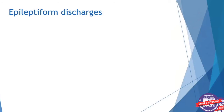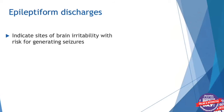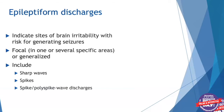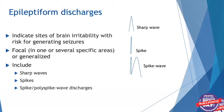Other common findings include epileptiform discharges — abnormalities that indicate sites of brain irritability with risk for generating seizures. They can be focal in one or several specific areas, or generalized, coming from all areas of the brain at once. These include sharp waves, spikes, and spike-polyspike wave discharges. A sharp wave looks a bit rounded; a spike is pointier; and then we can have a spike followed by a wave, or polyspikes — a few spikes followed by an aftergoing slow wave.